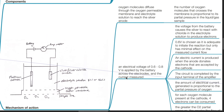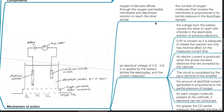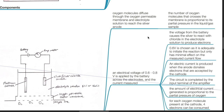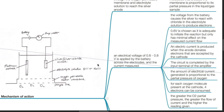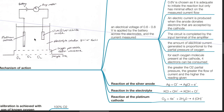Oxygen molecules diffuse through the oxygen-permeable membrane and electrolyte solution to reach the silver anode. The number of oxygen molecules that cross the membrane is proportional to its partial pressure in the liquid or gas sample. An electrical voltage of 0.6 to 0.8 volts is applied by the battery across the electrodes and the current is measured. The voltage causes the silver to react with chloride in the electrolyte solution to produce electrons. 0.6 volts is chosen as it is adequate to initiate the reaction but has only minimal effect on the measured current flow. An electric current is produced when the anode donates electrons that are accepted by the cathode, and the circuit is completed by the input terminal of the amplifier. For each oxygen molecule present at the cathode, 4 electrons can be consumed.